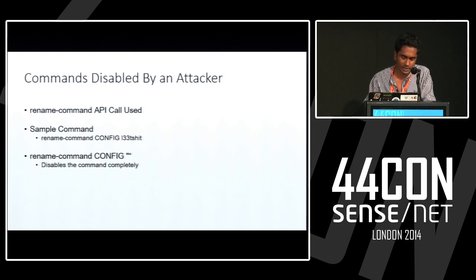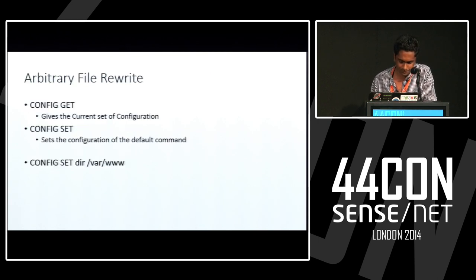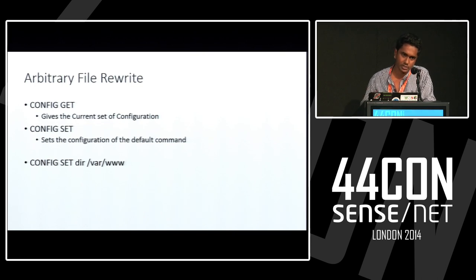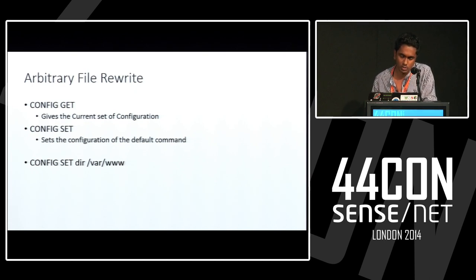Commands can be disabled by an attacker. As soon as an attacker logs into the Redis server, he could use the RENAME command and rename the main configuration command used to list the configuration in Redis — renaming it to whatever name he wants. He could also permanently disable the command by renaming it to nothing. For file rewrite: suppose you need to access the database dump — you could rewrite the configuration file to a location you have access to, such as the www folder, so an attacker could access it remotely.